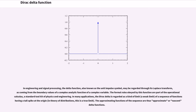The formal rules obeyed by this function are part of the operational calculus, a standard toolkit of physics and engineering. In many applications, the Dirac Delta is regarded as a kind of limit — a weak limit — of a sequence of functions having a tall spike at the origin. In the theory of distributions, this is a true limit. The approximating functions of the sequence are thus called approximate or nascent delta functions.